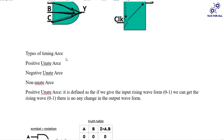Types of timing arcs. There are three types: positive unate arc, negative unate arc, and non-unate arc.